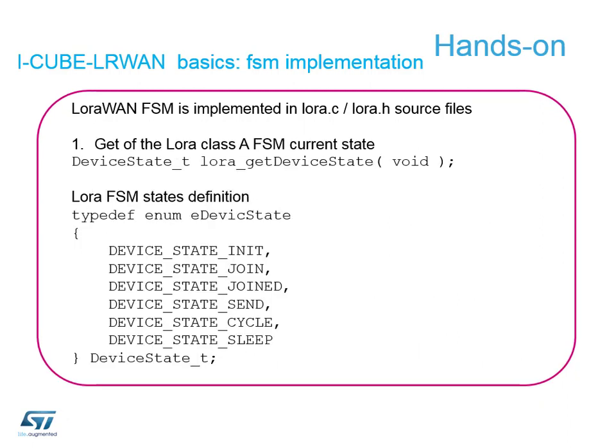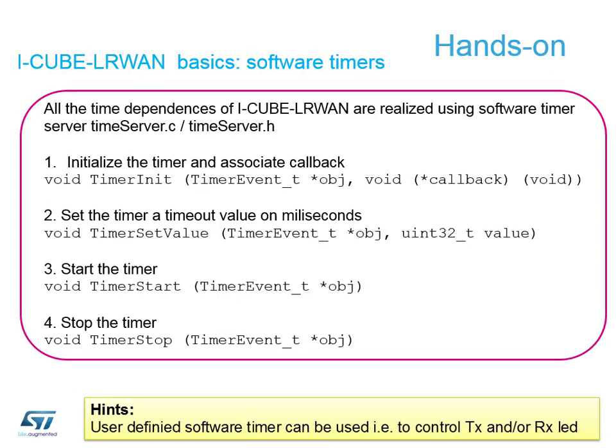At any point in this cycle we can check the status of our state machine to see where we are in the diagram. We're also going to use a time server to control one of the LEDs, so we need to initialize a timer event, set the value of that timer in one of our callback routines, then start or stop the timer after a certain amount of time — demonstrating a timer event available in the LoRa protocol.